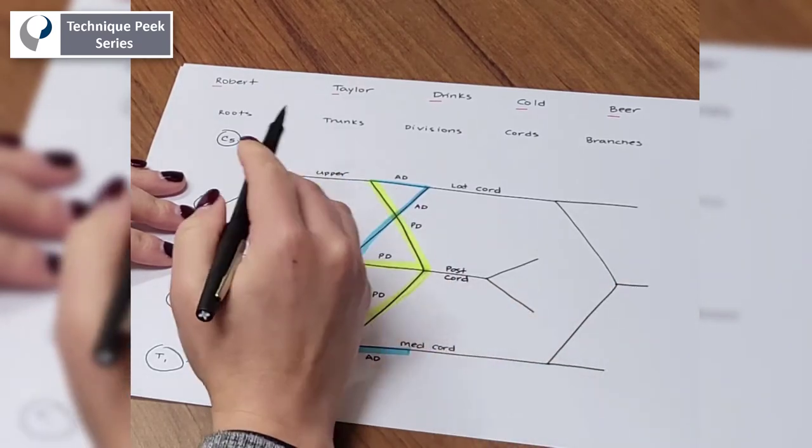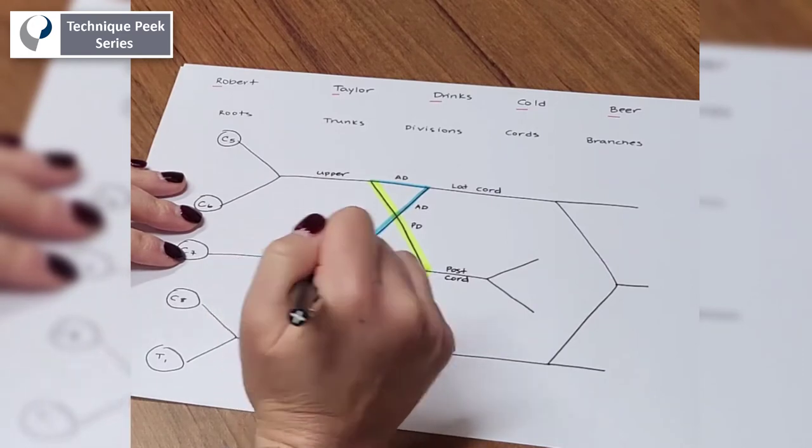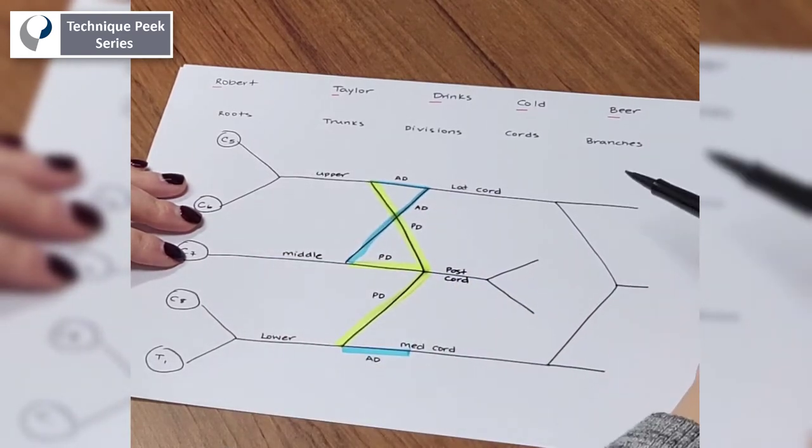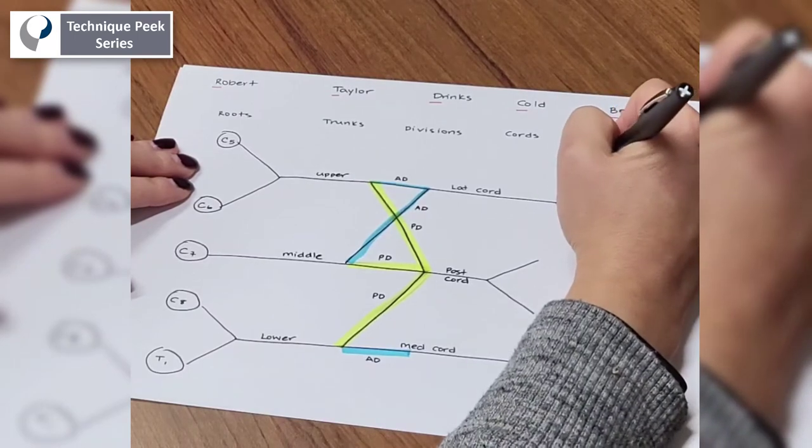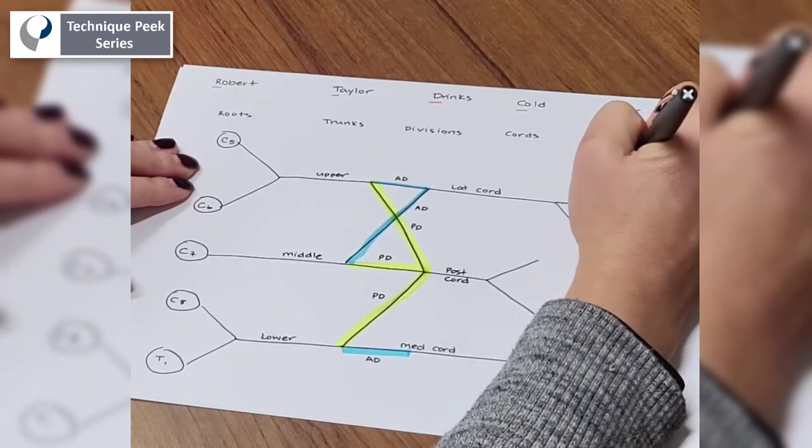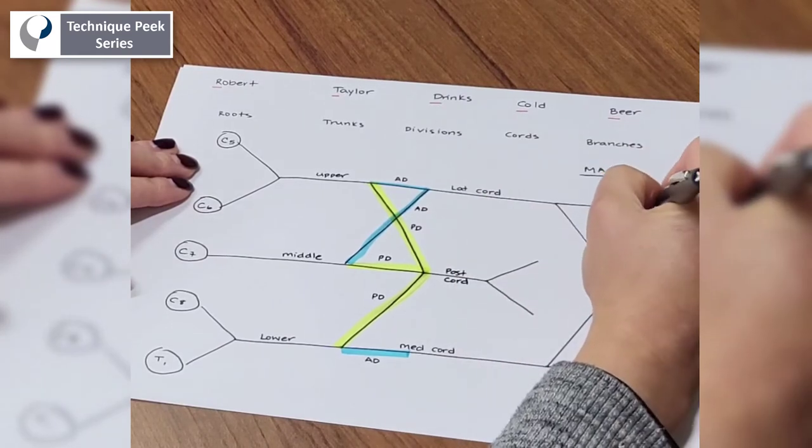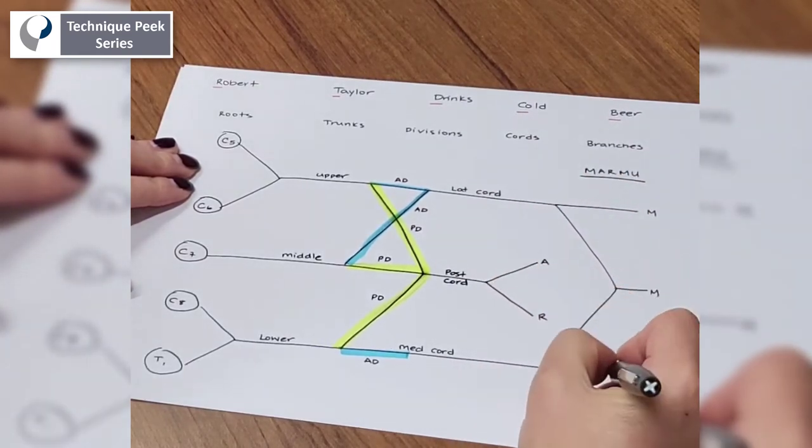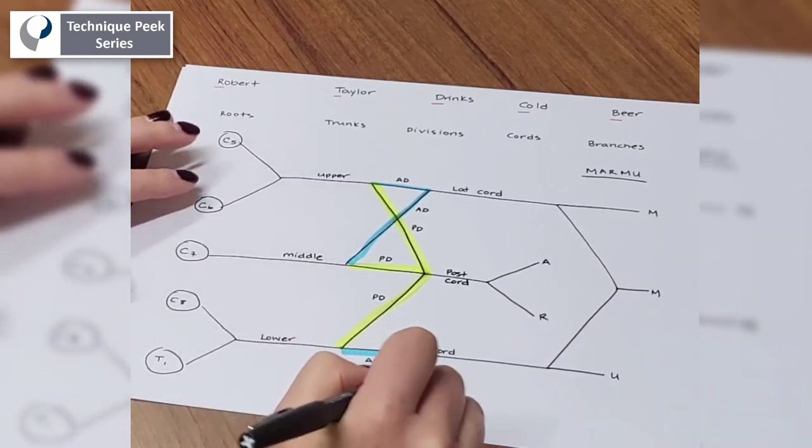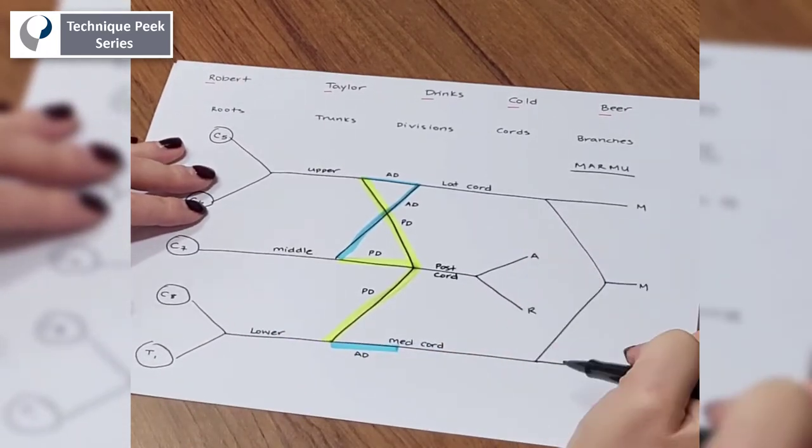Okay, so now we've got our roots, trunks, divisions, and cords. Now we have to do our branches. So there's another mnemonic device used to label the branches and that's MARMU. So we're gonna start M-A-R-M-U. So that gives us some hints. So now what do these stand for?